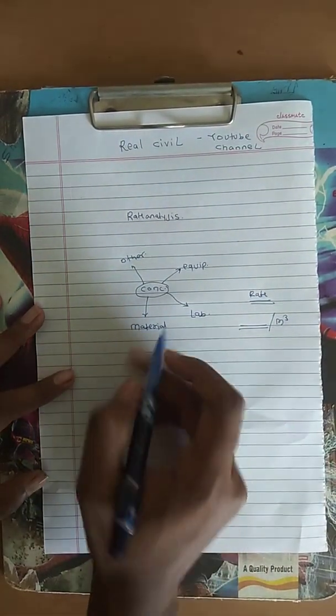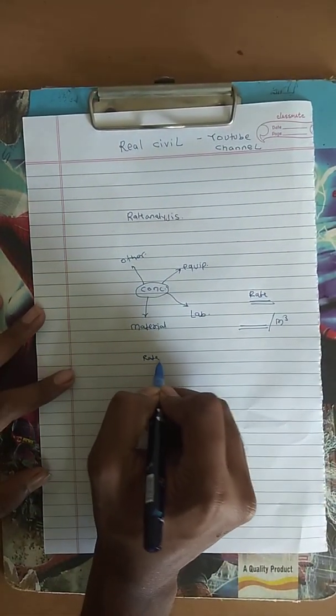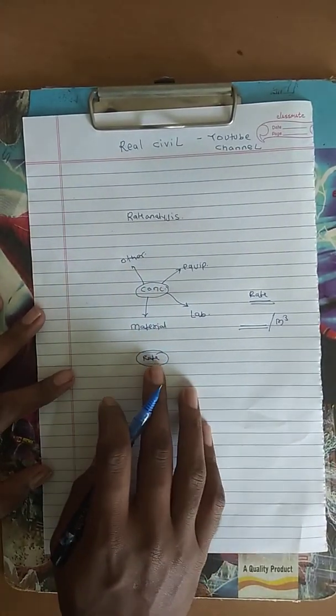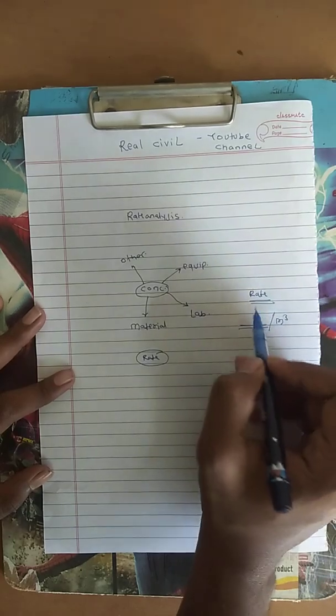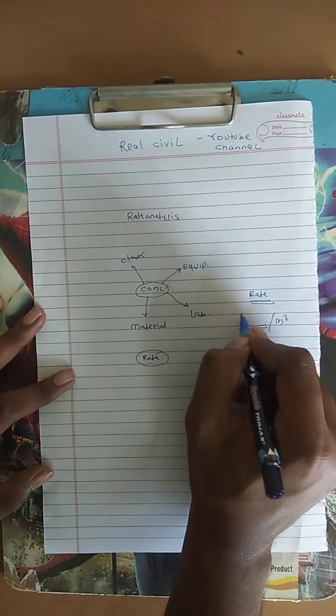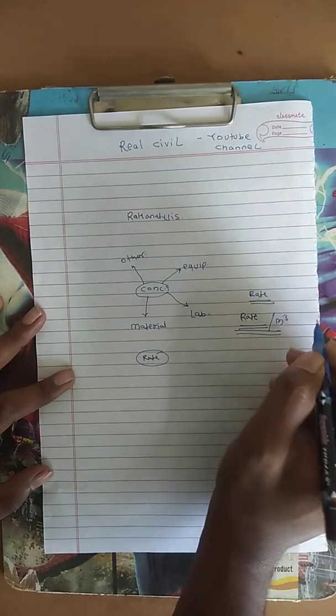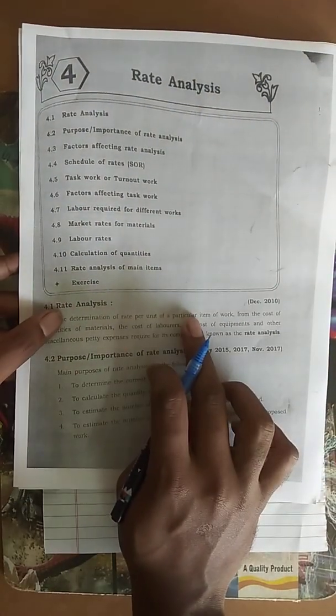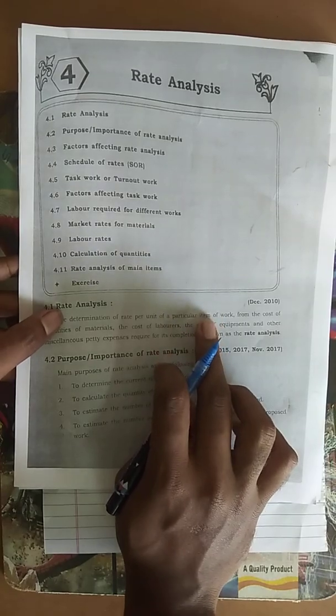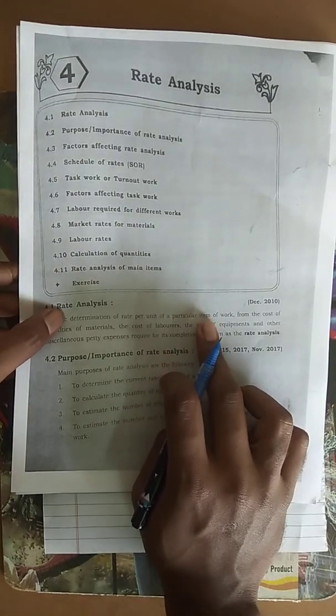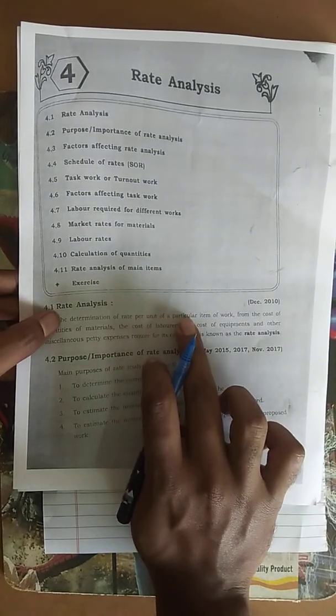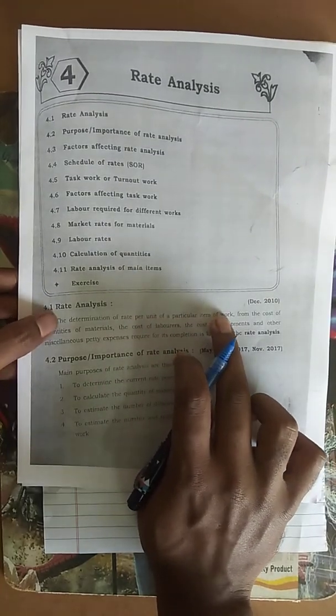Rate analysis is simple. From this example, you can understand that rate analysis is nothing but to carry out the rate per unit of a particular item - item means concreting or plastering.